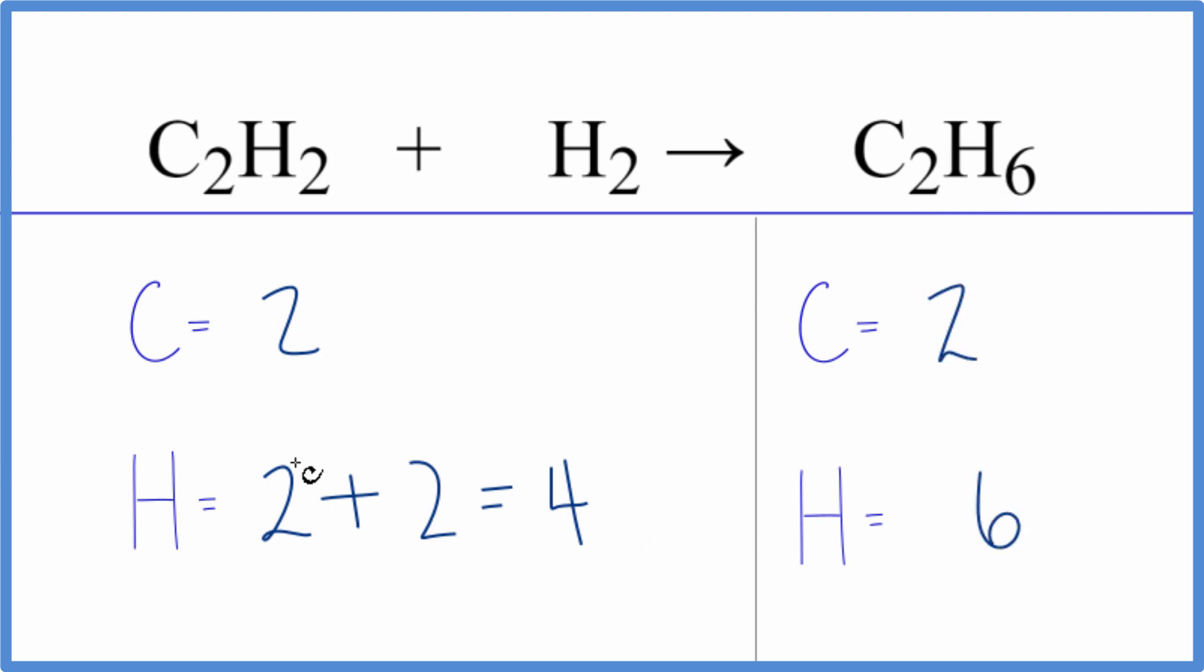So we need two more hydrogens, and probably the easiest way to do that is just double the H2, the hydrogen gas. So when we do that, we end up with the two hydrogens here, plus two times two is four. So that gives us six, and we're done.